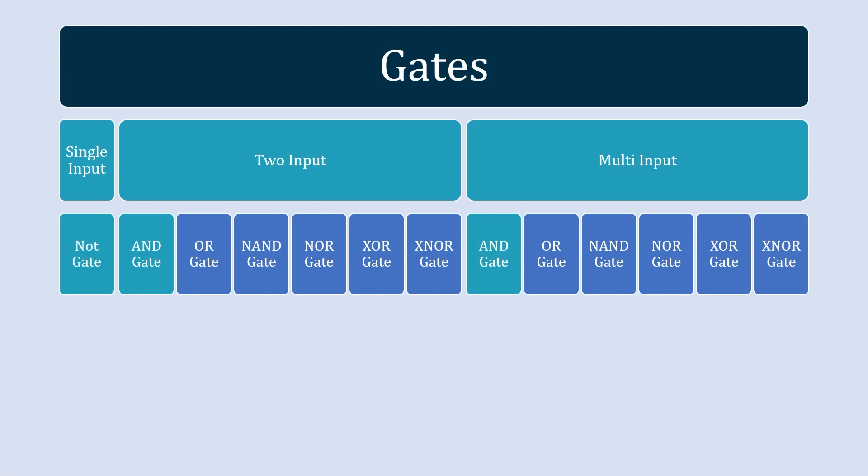This is the classification based on the inputs of logic gates. These logic gates are fundamental building blocks for digital circuits. By combining different types of logic gates we can create complex logic circuits, which can be used to build flip-flops and other memory elements, forming larger digital circuits.